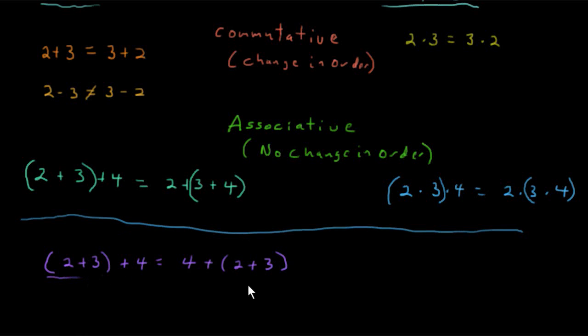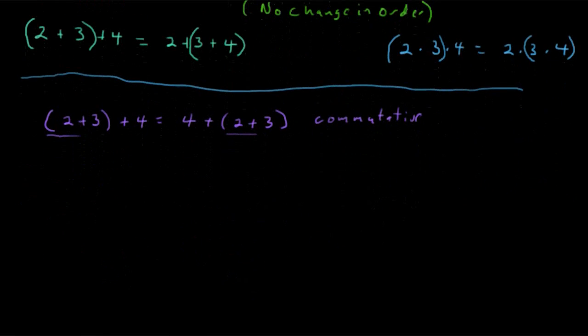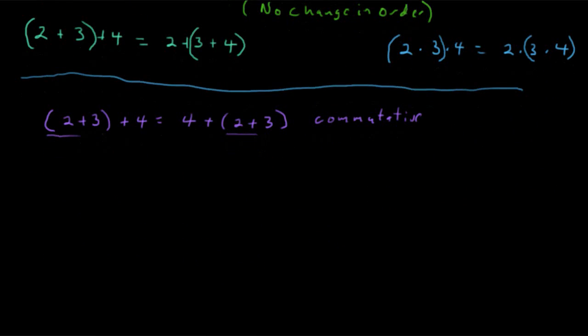And as a matter of fact, if you look, you'll see that the order did get changed. The 2 plus 3 got put into the end. So what we really have here is the commutative property. There's a change in order. And this is an example of the commutative property. That type of problem is missed frequently. So be aware of that. The order changed. It is the commutative property.